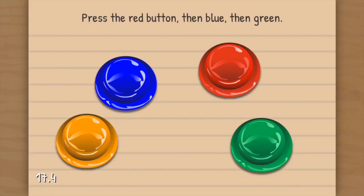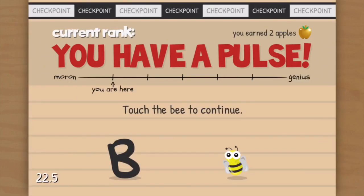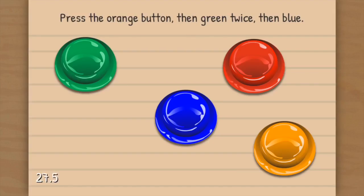Fantastic. Press the red button, then blue, then green. Great, didn't done. Touch the biggest duck. I have a pulse. Touch the bead to continue. Ah, you're trying to be clever. It was actually the B, not the letter B.